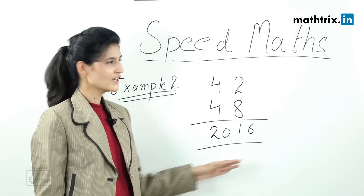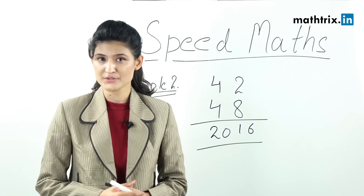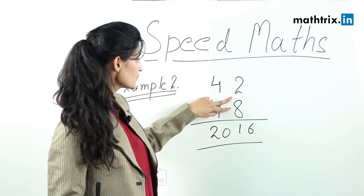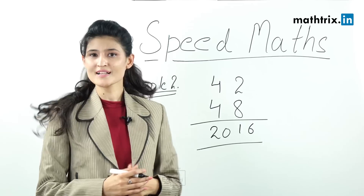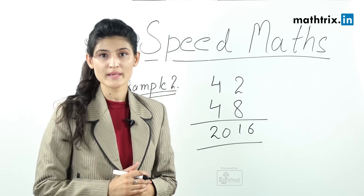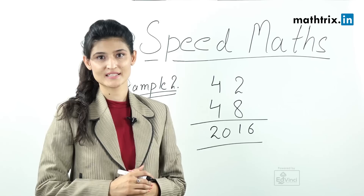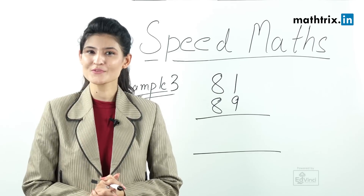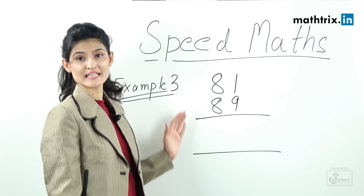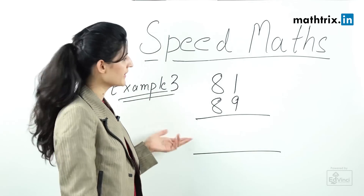Now, what if the product of the unit digits results in a single digit? In that case, we always add a zero before that single digit, because we need the last two digits of our answer. Let's see this in example number 3: 81 × 89.